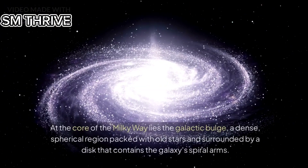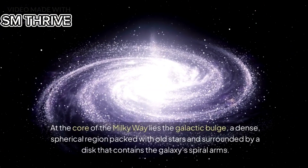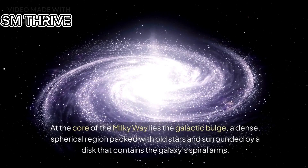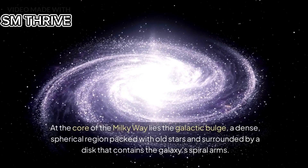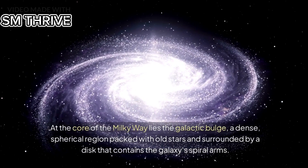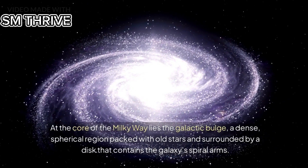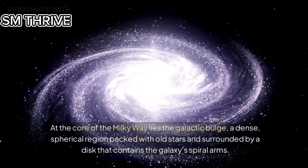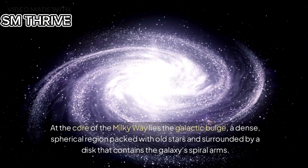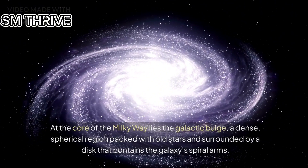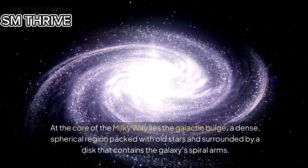At the core of the Milky Way lies the galactic bulge, a dense, spherical region packed with old stars and surrounded by a disk that contains the galaxy's spiral arms.